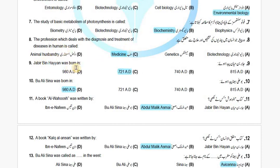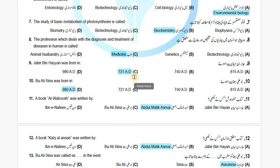The study of the basic metabolism of photosynthesis is called Biochemistry. The profession which deals with the diagnosis and treatment of diseases in humans is called Medicine. Jabir bin Hayyan was born in 721 A.D.